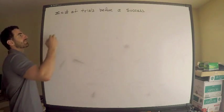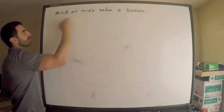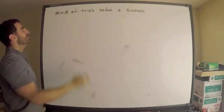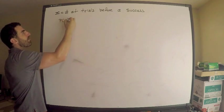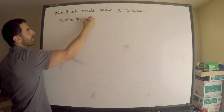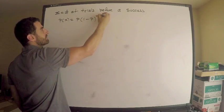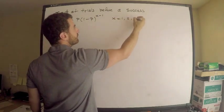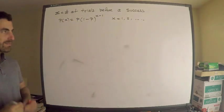So of course I'll need the PMF — the probability mass function. The probability mass function is given by the probability of success times 1 minus the probability of success raised to the x minus 1, where x equals 1 to infinity.